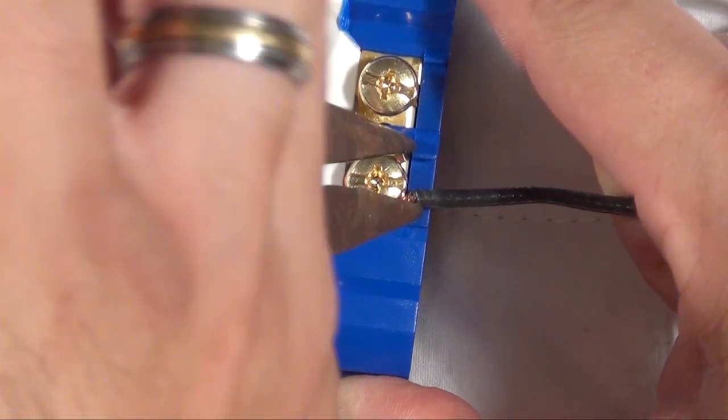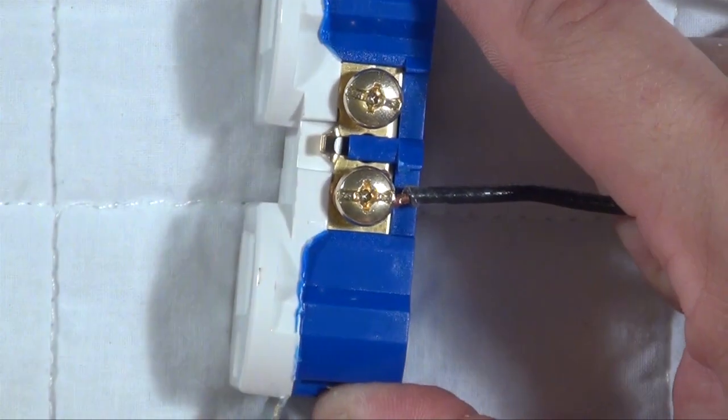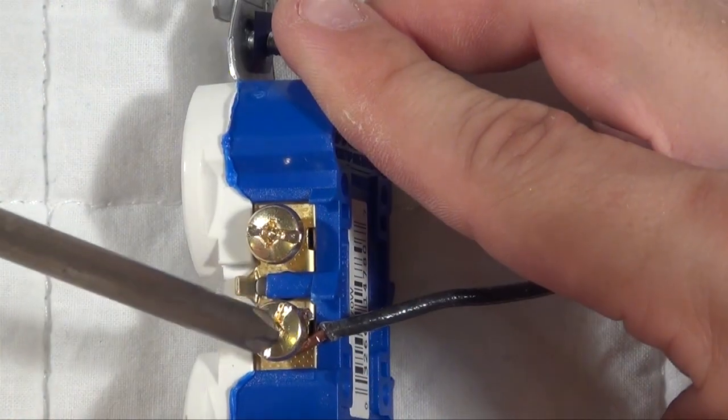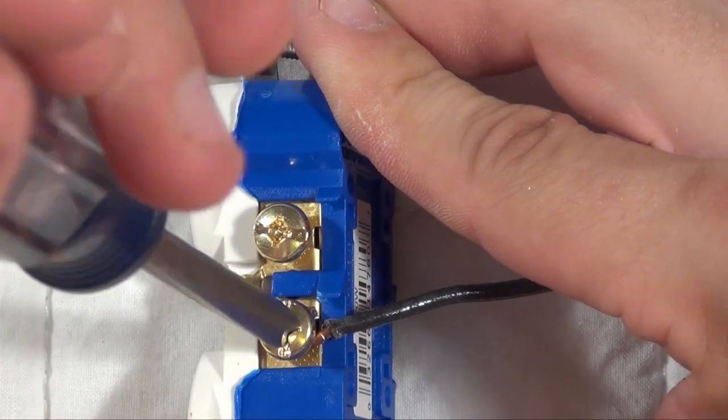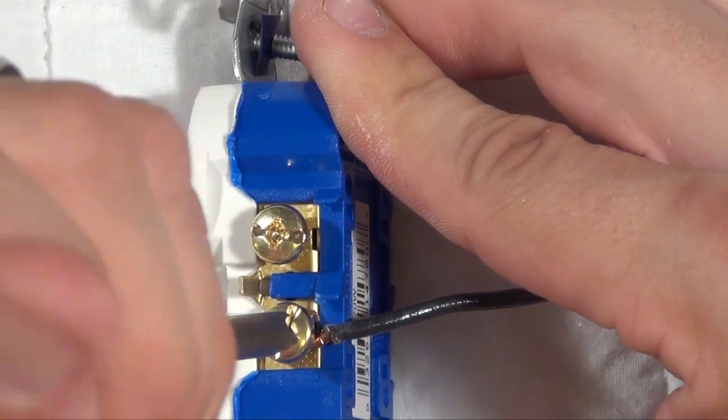Use your needle-nose pliers to tighten the loop around your screw. Once the loop is tight, use your screwdriver to tighten up your screw down on top of the loop. Take time to make sure that your screw is really tight on the loop.